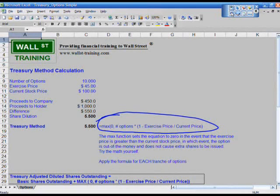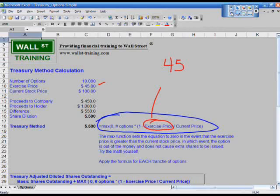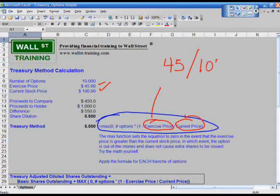So let's start with the first thing here. We have the exercise price. Let's start with what's inside the parentheses. The parentheses is the exercise price, which is how much at this point, it's $45. So this is $45. Now, what is the current price? The current price is $100, that's the 100. So 45 divided by 100 equals what? This equals .45.